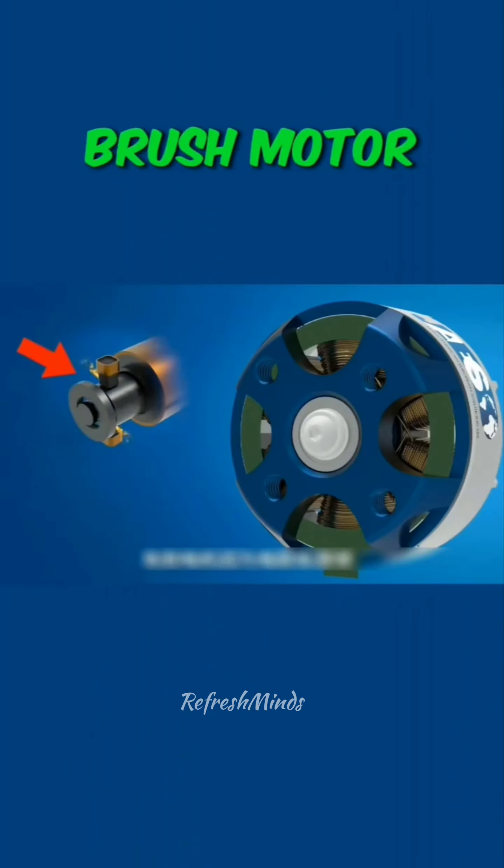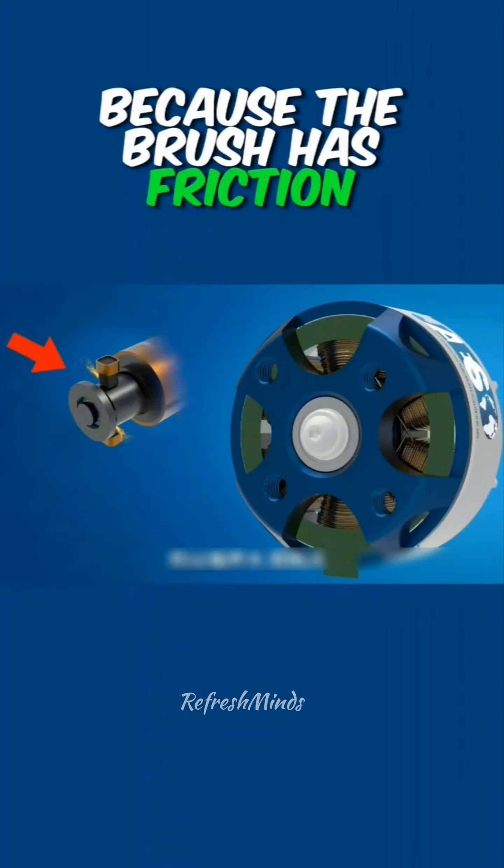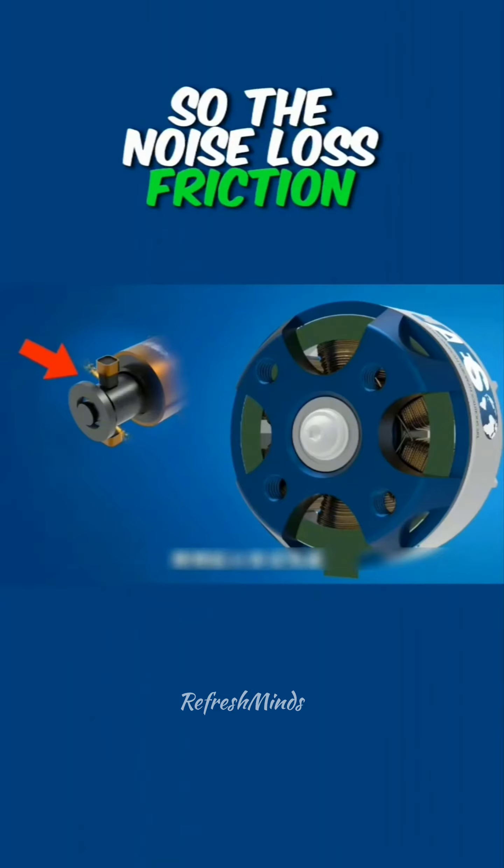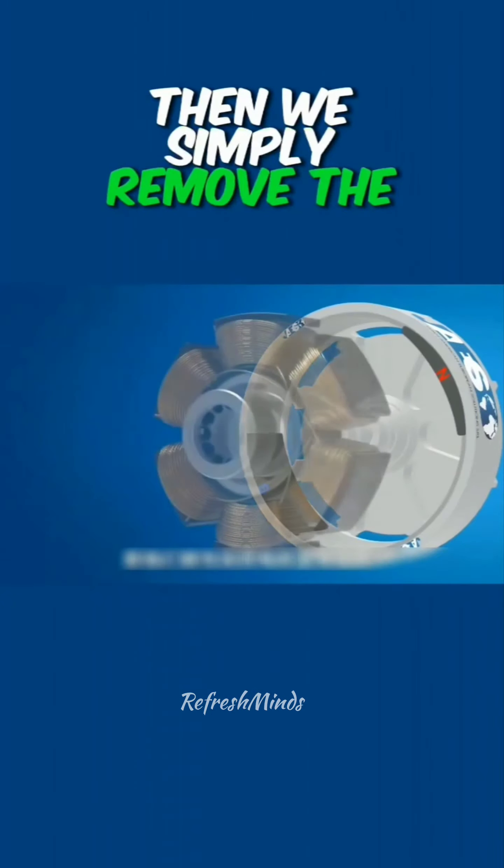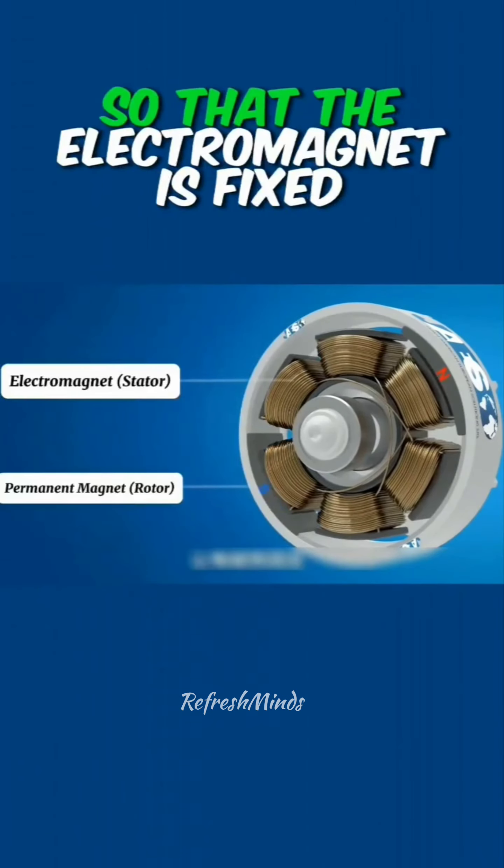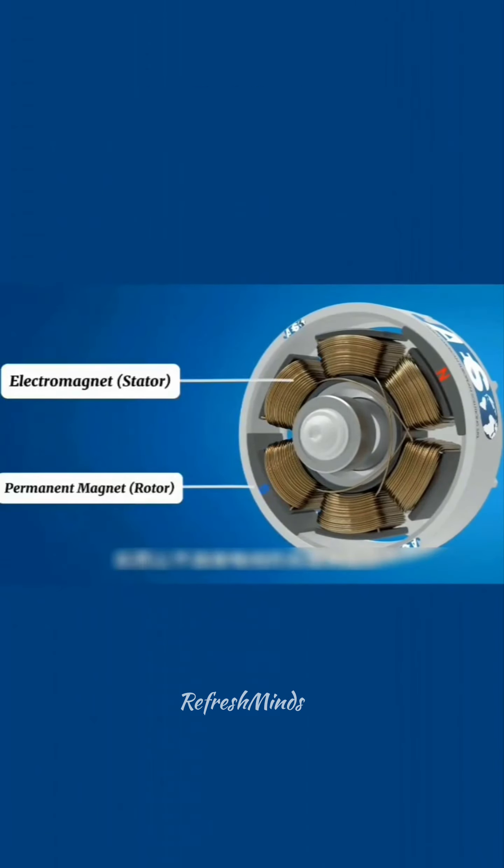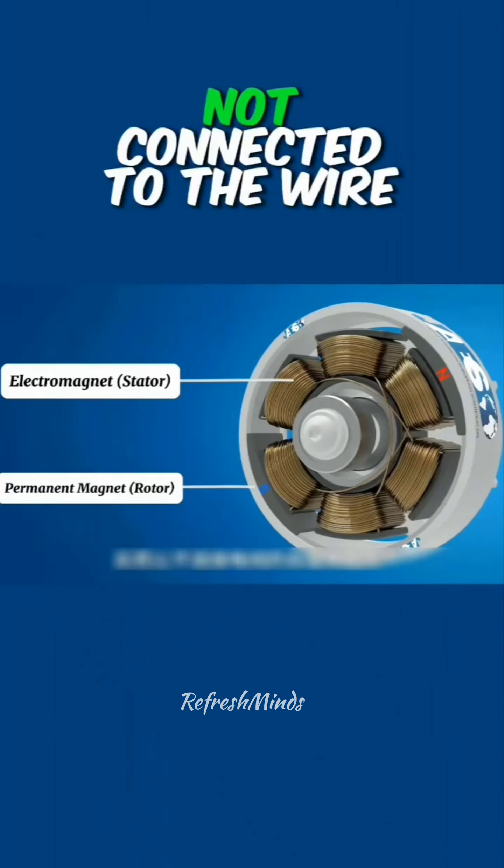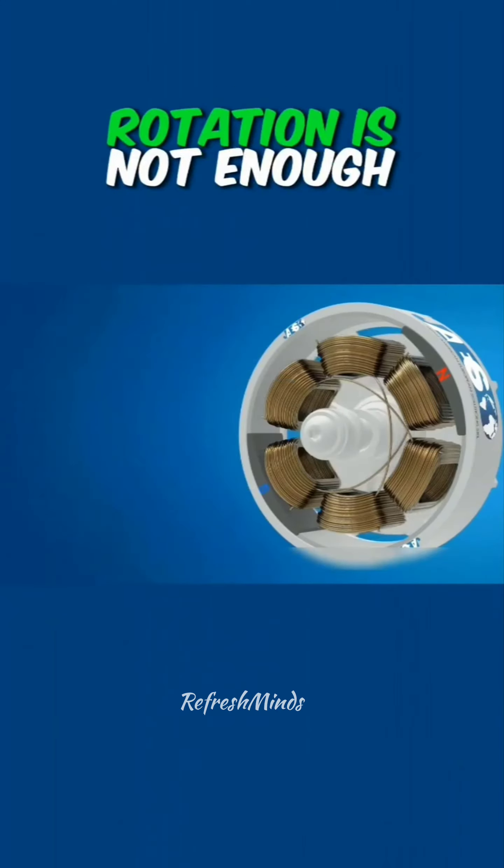Understanding this principle, let's look at the brushless motor. Brush motor because the brush has friction, so the noise loss friction fire safety is poor. Then we simply remove the brushes directly so that the electromagnet is fixed, instead of letting the permanent magnets not connected to the wire rotation.